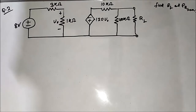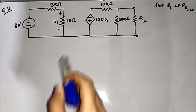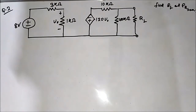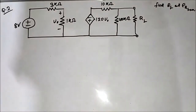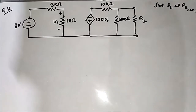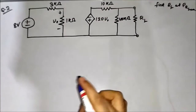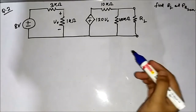Hello friends, welcome to Engineering Tutorial. We'll continue our discussion with the Maximum Power Transfer Theorem with dependent sources circuits. The circuit is given and we have been asked to find the value of RL such that maximum power will be transferred to the load, and the value of that maximum power. We'll use the usual Thevenin equivalent circuit approach.